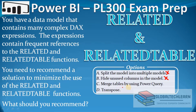Option C is to merge tables by using Power Query. By merging tables we can simplify the model as we will have fewer tables. Option D is transpose, which we use usually for reshaping data, but the given case here is to remove complex measures from the model, so this option we can ignore.